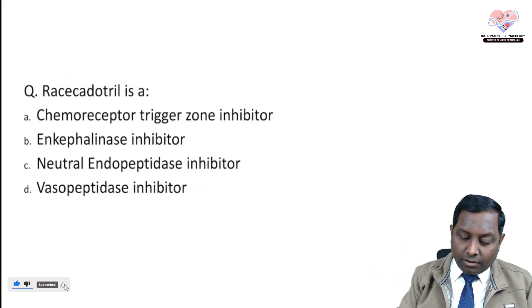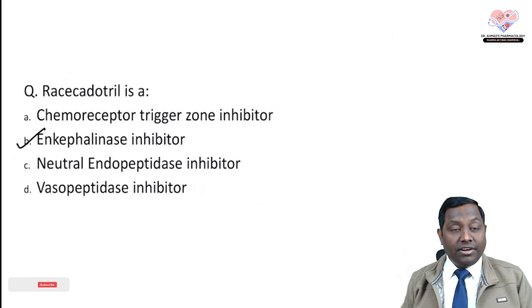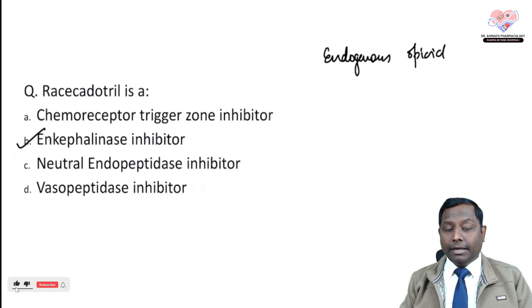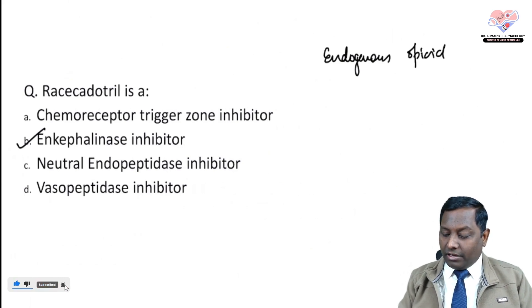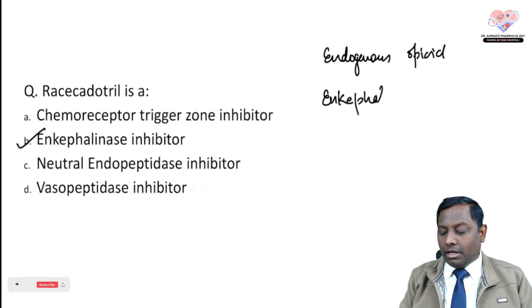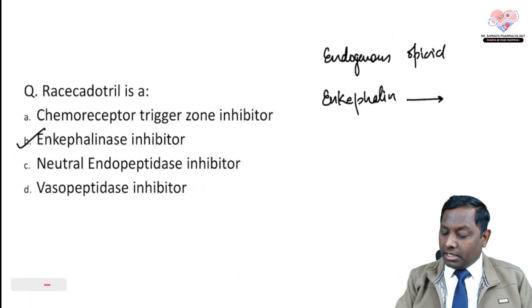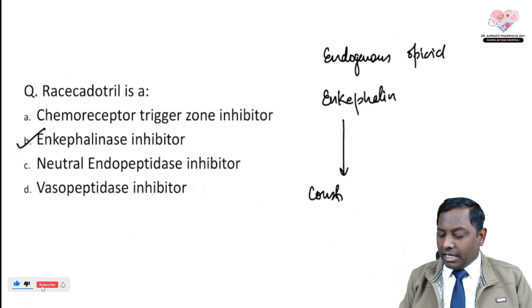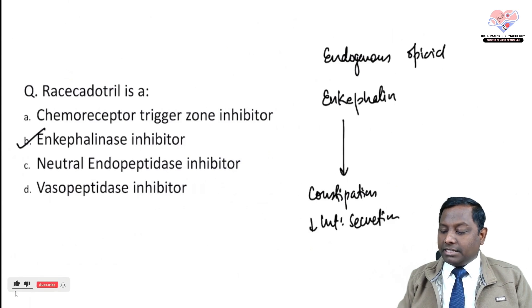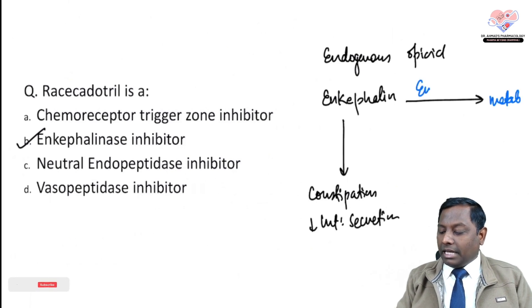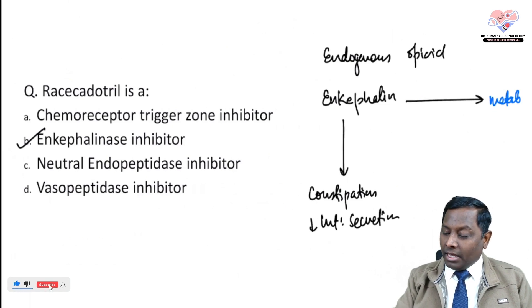The next question is about racecadotril, which is an enkephalinase inhibitor. To understand this: there are endogenous opioids in our body — enkephalin, endorphin, dynorphin. Enkephalin causes constipation by decreasing intestinal motility and intestinal secretion. However, enkephalin is rapidly metabolized and inactivated by an endogenous enzyme called enkephalinase.